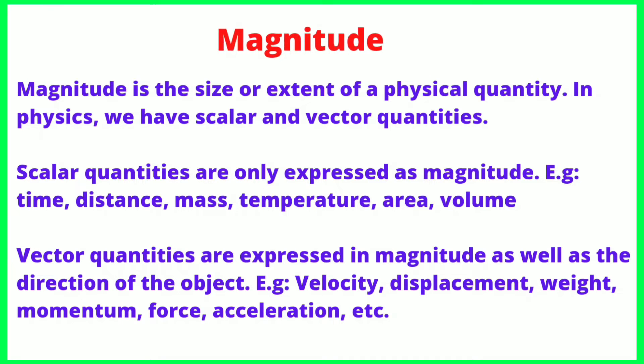Next is magnitude. Magnitude is the size or extent of a physical quantity. In physics, we have scalar and vector quantities. Speed is a scalar quantity, and velocity is a vector quantity. Scalar uses distance; vector uses direction — that is displacement. Velocity has direction, making it a vector quantity. Speed has no direction, making it a scalar quantity.